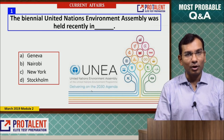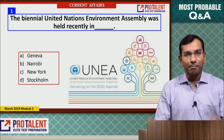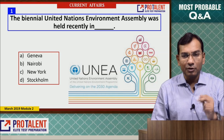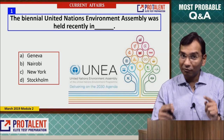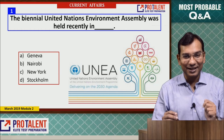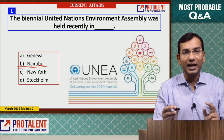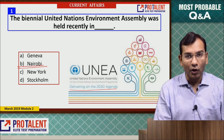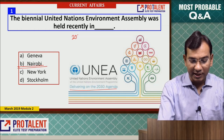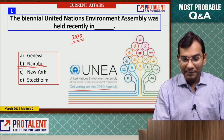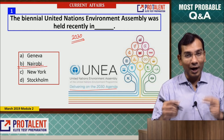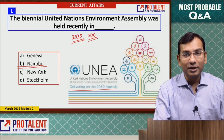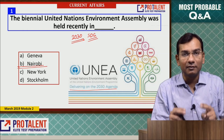Question 1: The bi-annual United Nations Environment Assembly was recently held — comment below where it was held. The answer is Nairobi. This year the theme was 'Delivering on 2030 Agenda,' which refers to the Sustainable Development Goals.